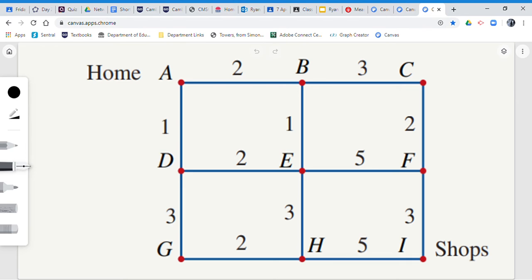Last example. So Darcy has drawn a network diagram to represent several streets for traveling from his home to the shops. I love that they're called the shops here, by the way. The numbers indicate the times in minutes. So all those numbers represent the times in minutes. Describe the shortest path and minimum traveling time.